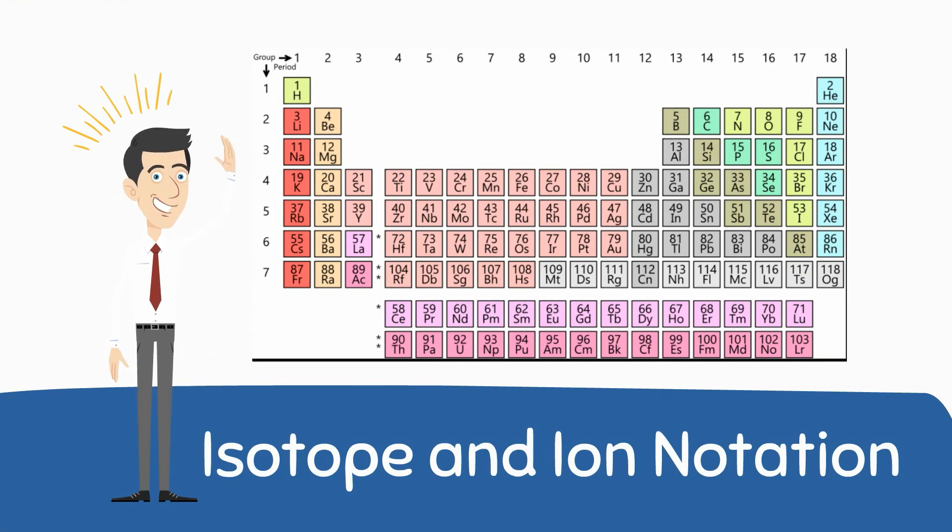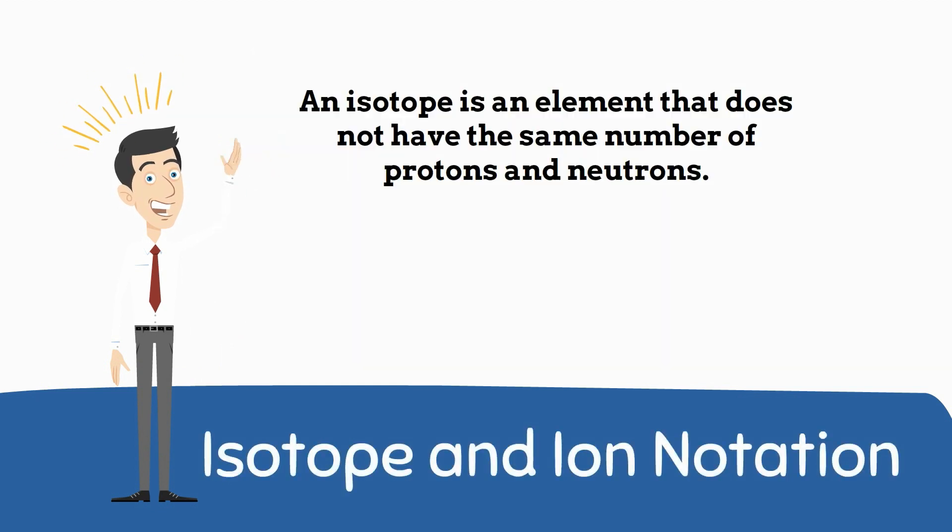An isotope is an element that does not have the same number of protons and neutrons. For example, carbon has an atomic number of 6 and therefore has 6 protons.